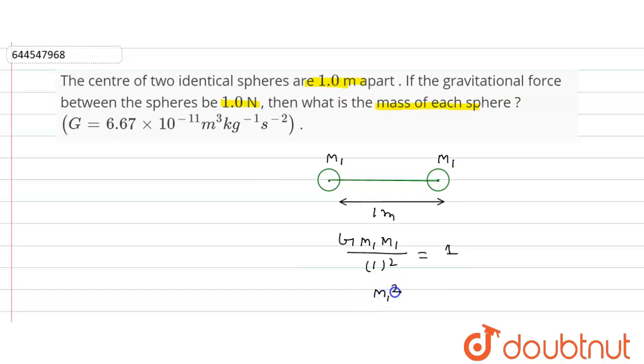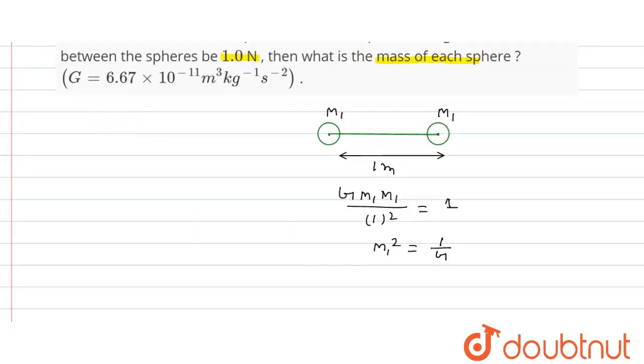So from here, m1 square will be how much? This will be 1 upon G. So here, value of G is given and m1 we have to find. So m1 value will be how much? Under root of 1 upon G.